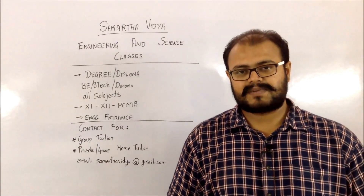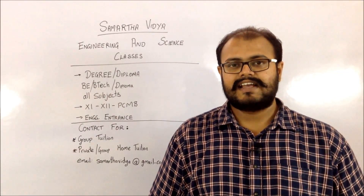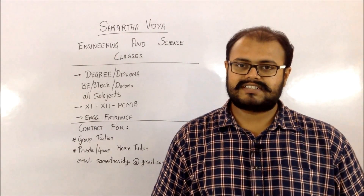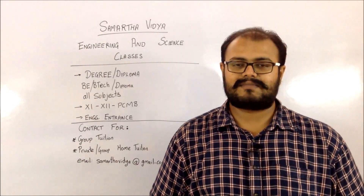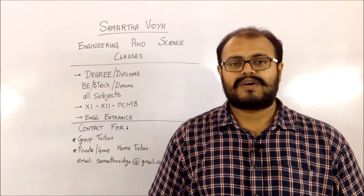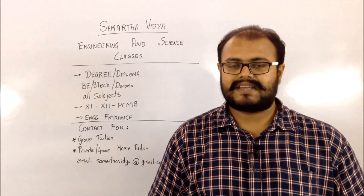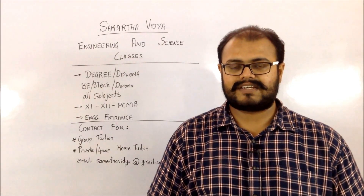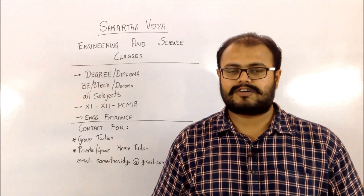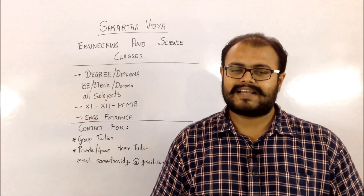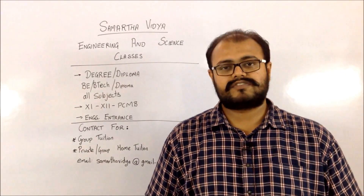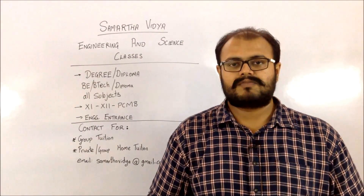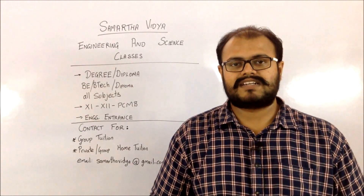You should start preparing for the option form now. You have to decide on the institutes you want to apply for, and also decide upon the various branches you would apply for in each institute. Once finalized, make a list. This will help you fill up your option form neatly. The filling of the option form is very important because seats will be allotted according to your preferences, so if your preference is not correct, you might land up in the wrong college.